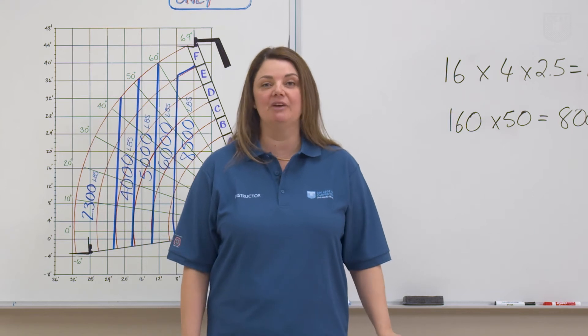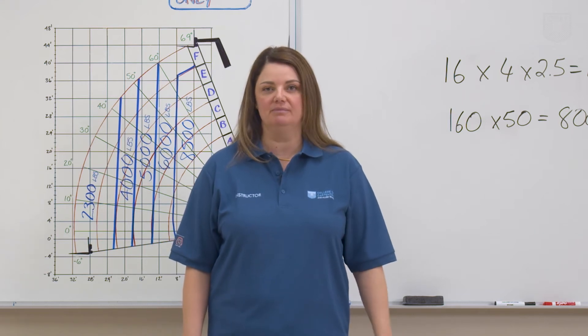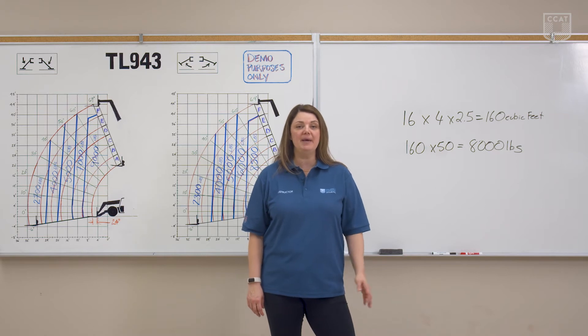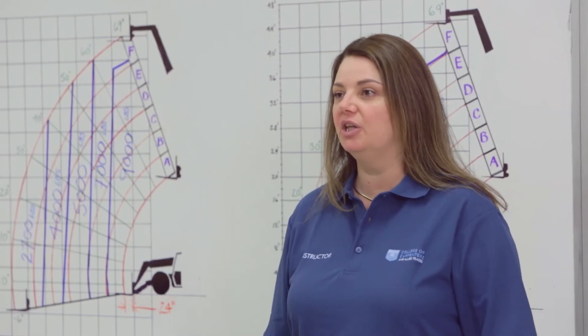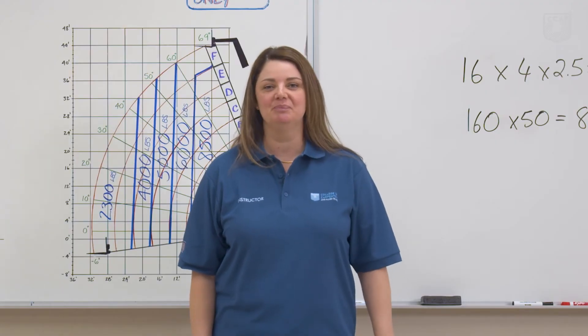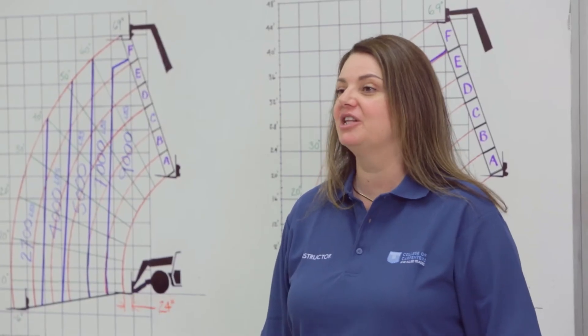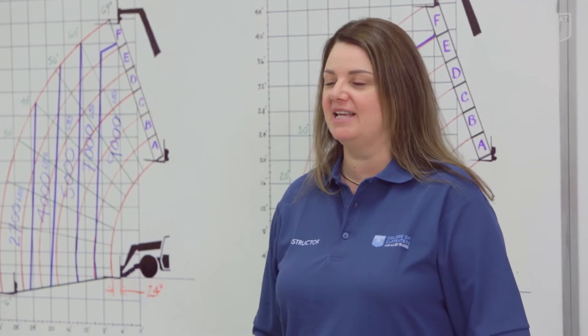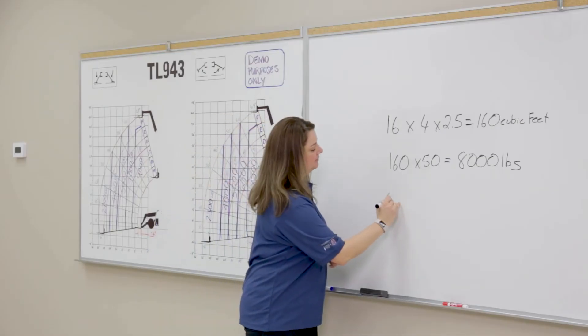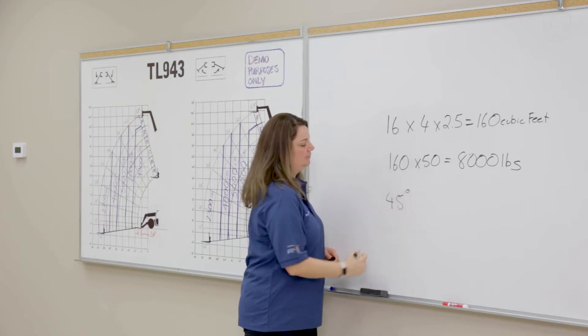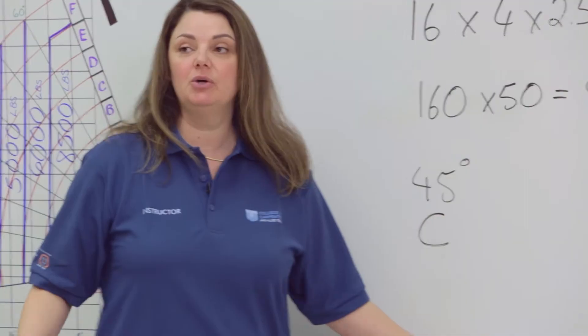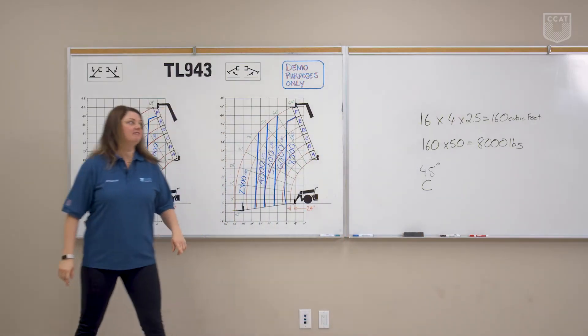A simple way to determine the height and reach of the lift is to do a dry run. By placing the forks approximately where the load needs to go or be picked, the operator can look at the load angle indicator on the boom and the corresponding letter on the boom. Knowing this and referring to the load chart will determine whether this is a safe lift. The angle indicator reads 45 degrees, and the corresponding letter on the boom was C.